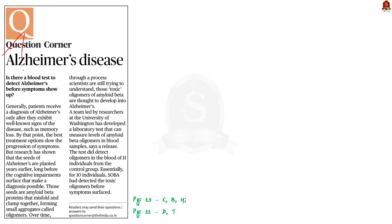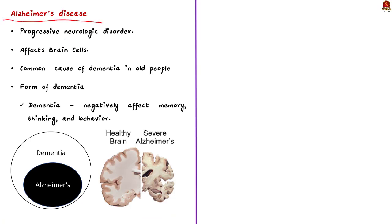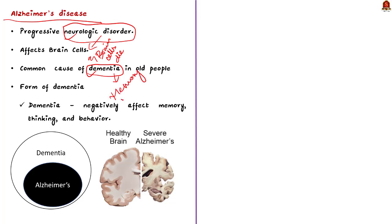The next news article is about a novel method to detect Alzheimer's disease. Alzheimer's disease is a progressive neurologic disorder that causes the brain to shrink and brain cells to die. It is the most common cause of dementia among older adults. Note that dementia is a broader term for conditions that negatively affect memory, thinking, and behavior, while Alzheimer's is one type of dementia.